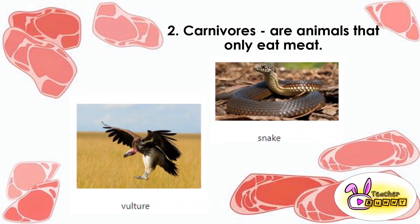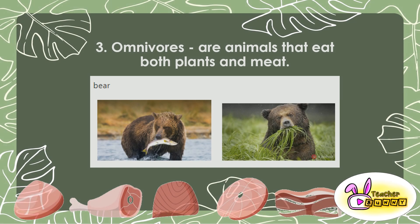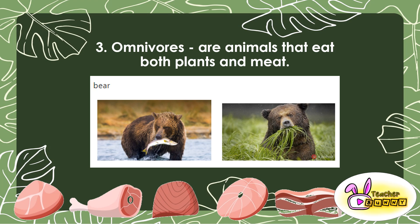Other examples of carnivores are vulture and snake. These animals love eating meat, they do not like plants. We are done with the herbivores — they only eat plants — and the carnivores — they only eat meat. But what do you call an animal that loves eating both plants and meat?